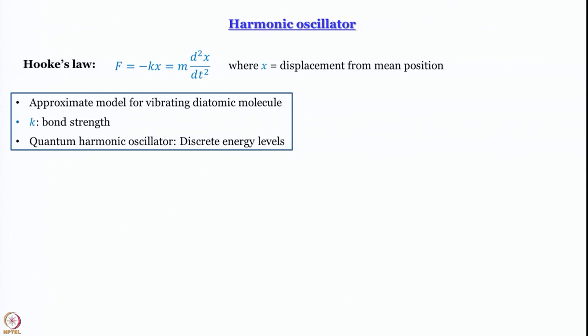When we talk about molecules, the classical description is not complete and we have to discuss quantum harmonic oscillators. Going from classical to quantum regime, discrete energy levels come in and we get wave functions. Let us first simplify Hooke's law: rearranging gives d²x/dt² = −(k/m)x.